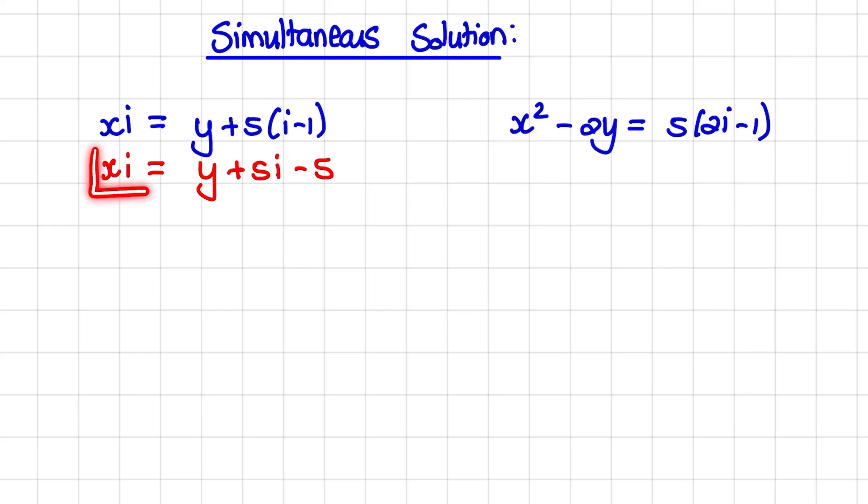And what I want to do now is isolate the y, meaning have it alone on one side. So that will be xi minus 5i plus 5 is equal to y.